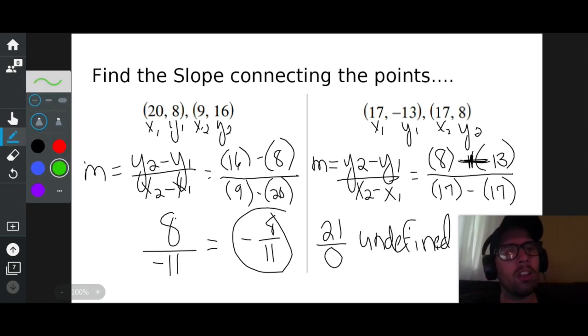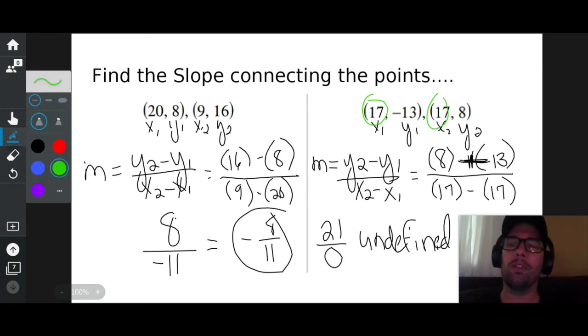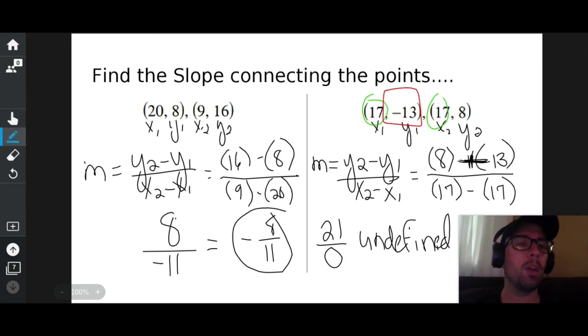I wonder if I could have figured out by looking at the original problem that it was undefined. Oh yeah. See how x is 17 and x is 17? If the x's are the same exact number, your slope is going to be undefined. If the y's are the same exact number, then the slope would be zero because the zero would show up on top.